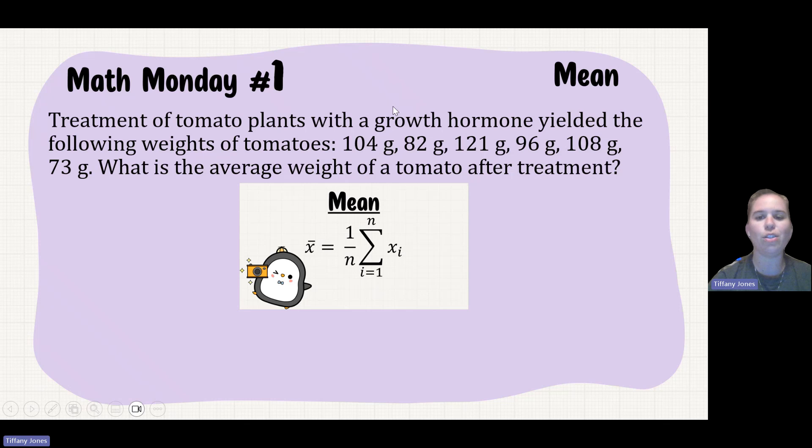I know that I have 1, 2, 3, 4, 5, 6 different values, so N is equal to 6. And let me go ahead and sub that in. So 1 over 6, because there's an N of 6, summation i equals 1, and then X_i.